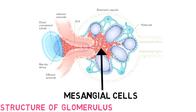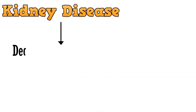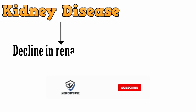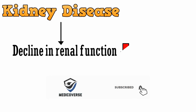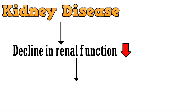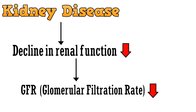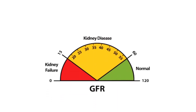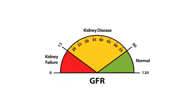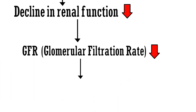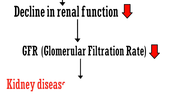Now let's discuss the basics of kidney disease. Kidney disease is basically caused by a decline in renal function due to many factors. This decrease in renal function results in a decrease in GFR — glomerular filtration rate. In simpler words, GFR tells you how well your kidneys are functioning. If low GFR persists for more than 3 months, it leads to kidney disease.